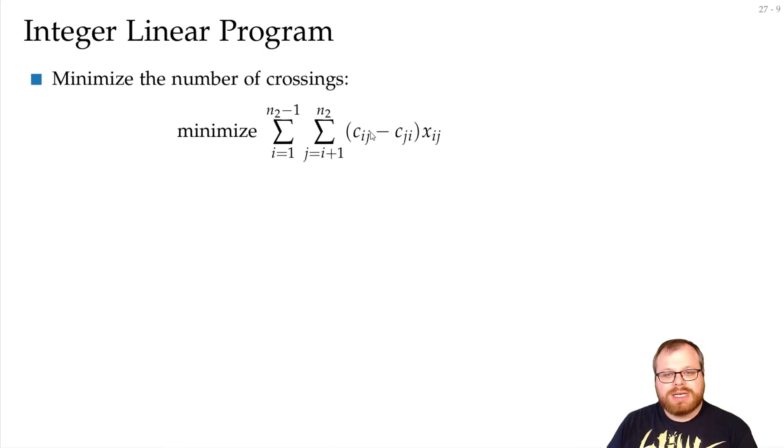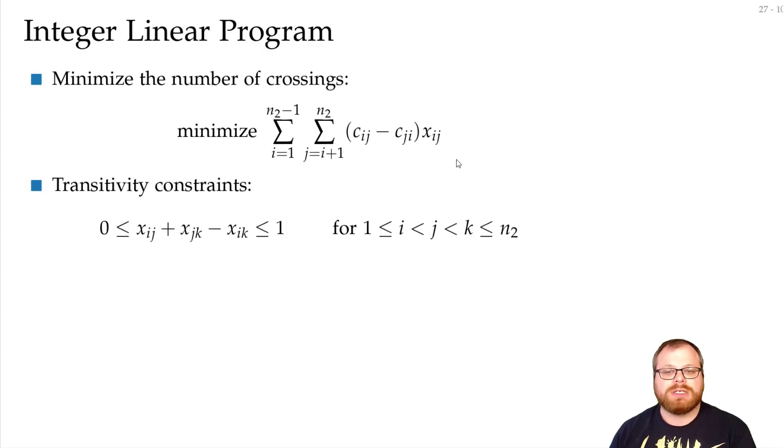Our minimizing function looks like this. We sum up over all pairs, take Cij minus Cji times Xij. We have to make sure that we really get an order here, so we add these transitivity constraints. If some vertex i lies to the left of j, and j lies to the left of k, then of course i also has to lie to the left of k. And the same with to the right. That's the whole program.